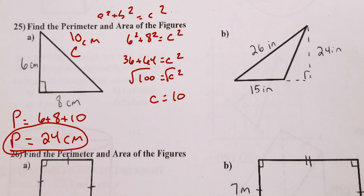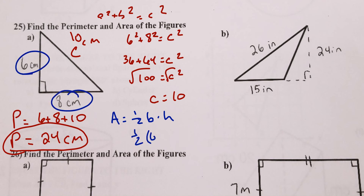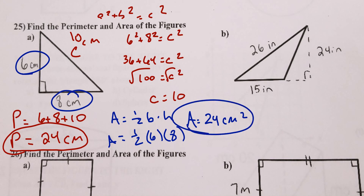For the area, area = ½ × base × height. This is the base and that's the height, so area = ½ × 6 × 8 = 24 square centimeters. Make sure you write square centimeters — not just centimeters — or it won't be correct. Make sure you have the A label too.